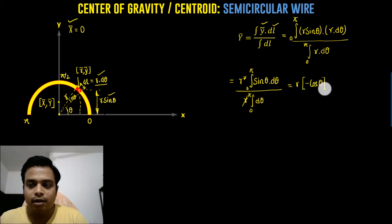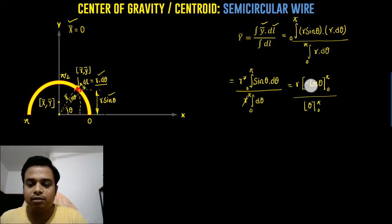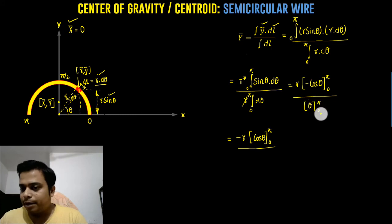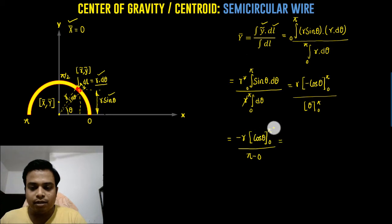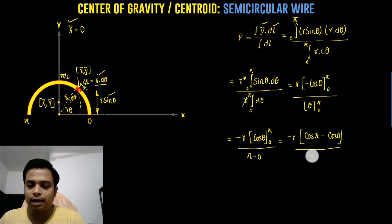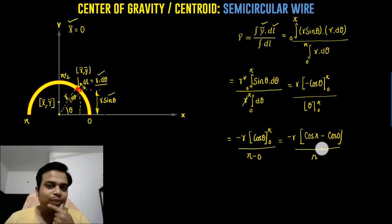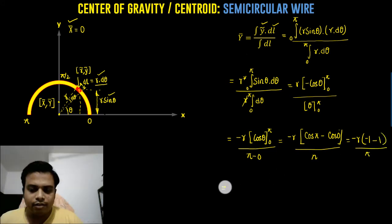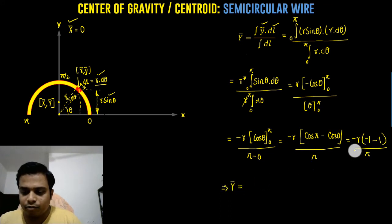Taking the minus sign outside, we have −cos(θ) from zero to π in the numerator, and π − 0 in the denominator. Substituting the limits: cos(π) = −1 and cos(0) = 1, so the numerator becomes −R·(−1 − 1) = −R·(−2) = 2R. Divided by π, the final result for ȳ is 2R/π.